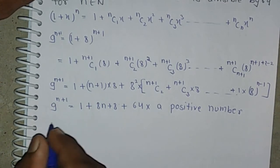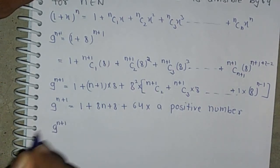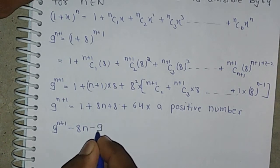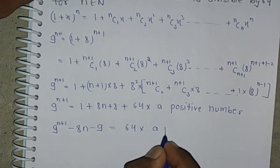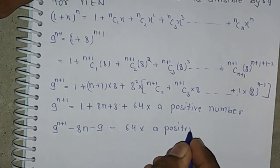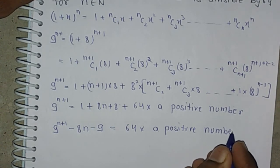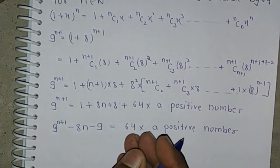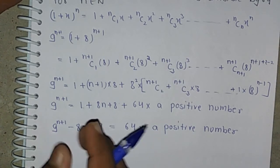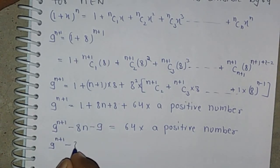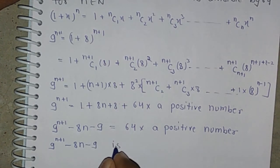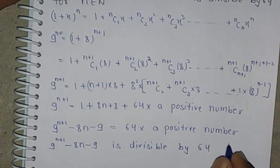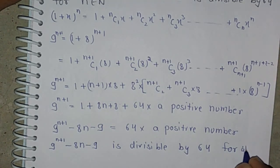Shifting terms to the right-hand side, we get 9 to the power n plus 1 minus 8n minus 9 equals 64 times a positive number. This means the expression 9 to the power n plus 1 minus 8n minus 9 is divisible by 64 for all n belonging to the natural numbers N.